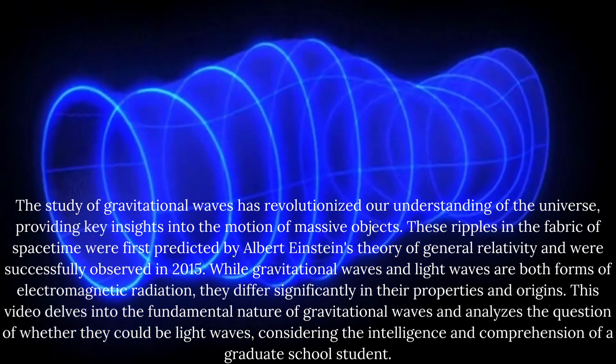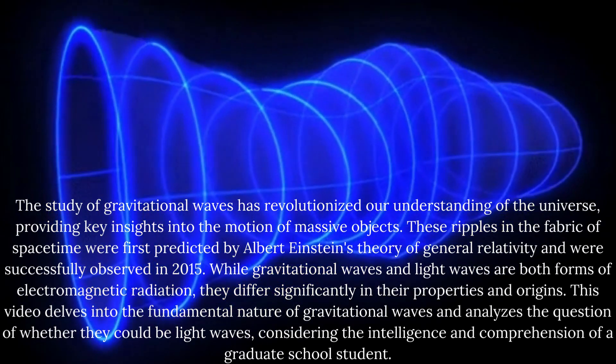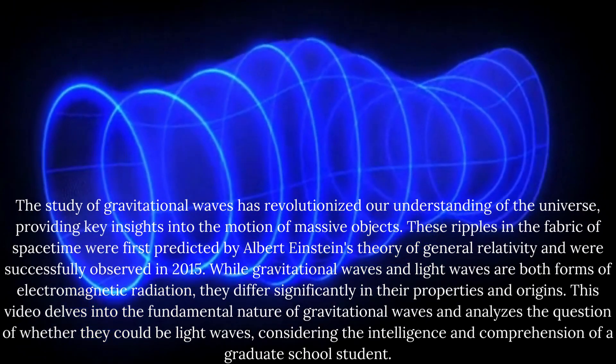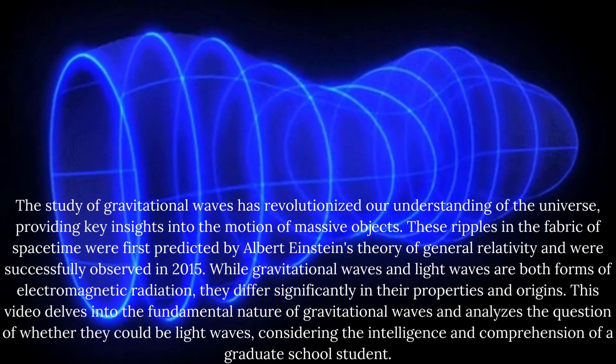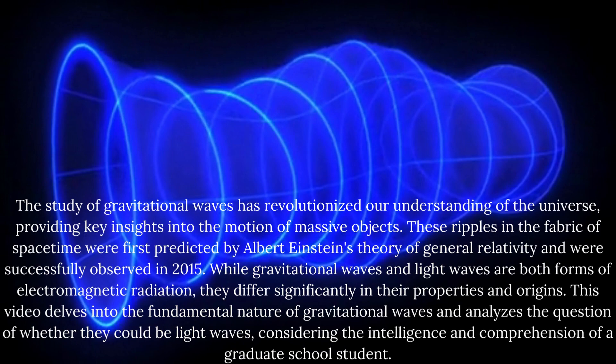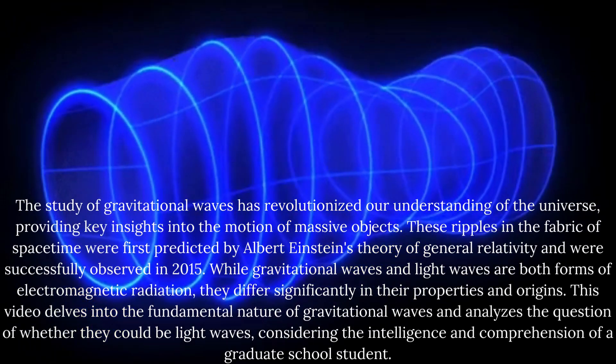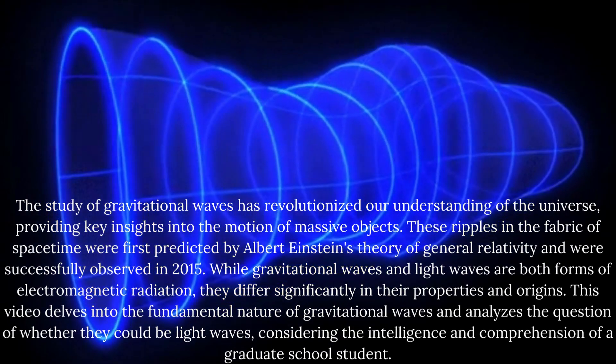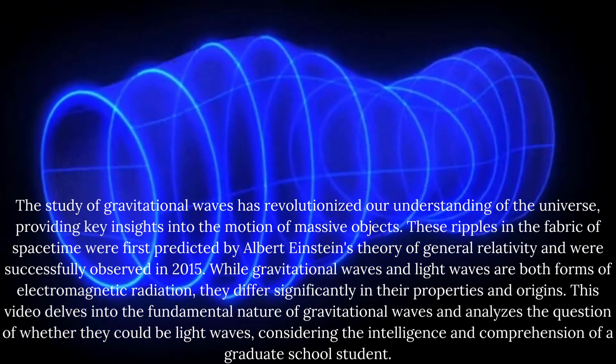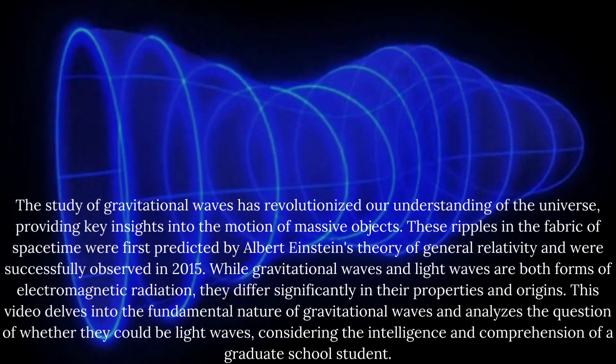While gravitational waves and light waves are both forms of electromagnetic radiation, they differ significantly in their properties and origins. This video delves into the fundamental nature of gravitational waves and analyzes the question of whether they could be light waves, considering the intelligence and comprehension of a graduate school student.